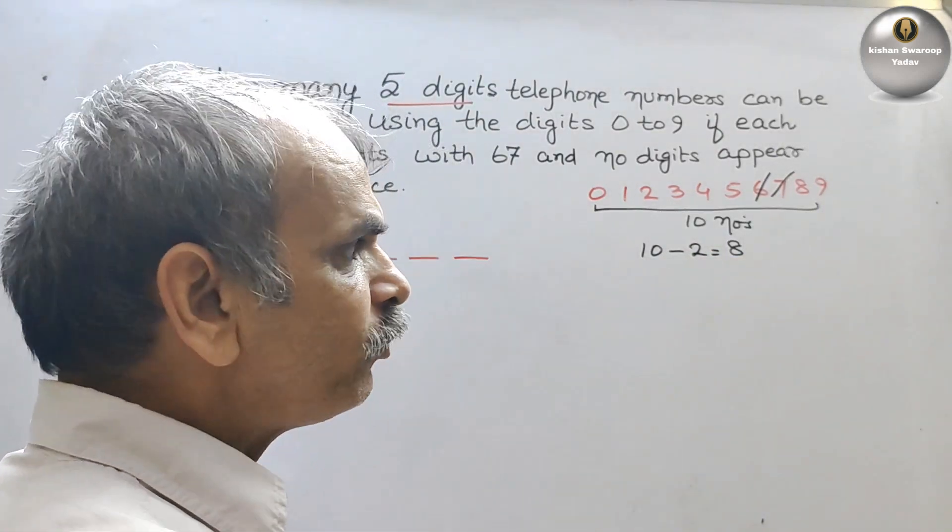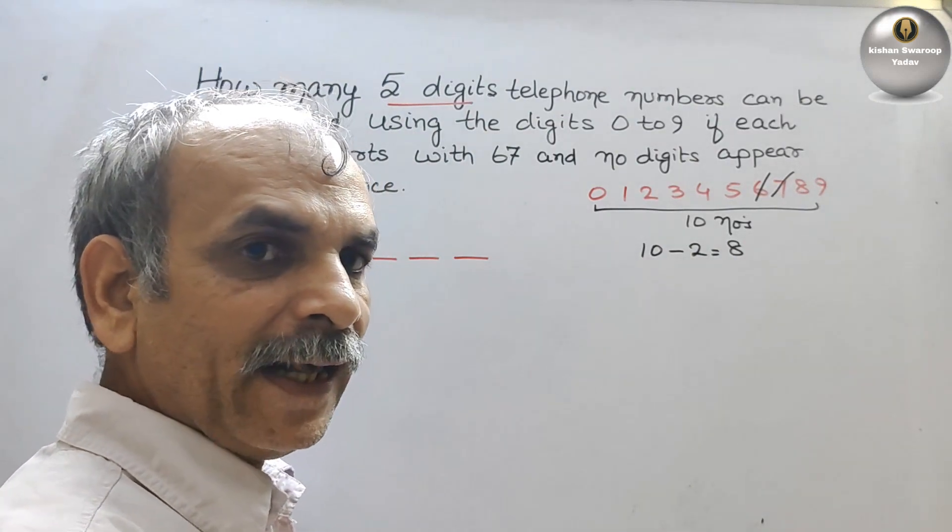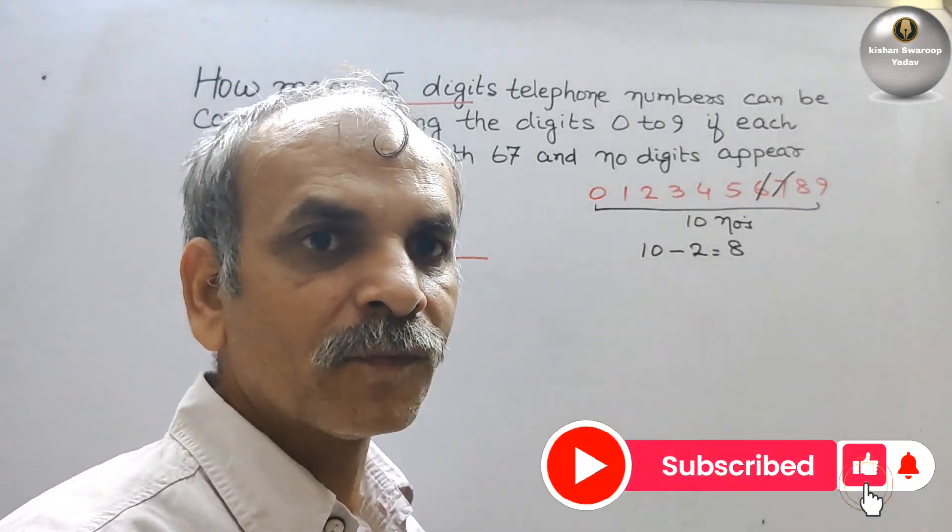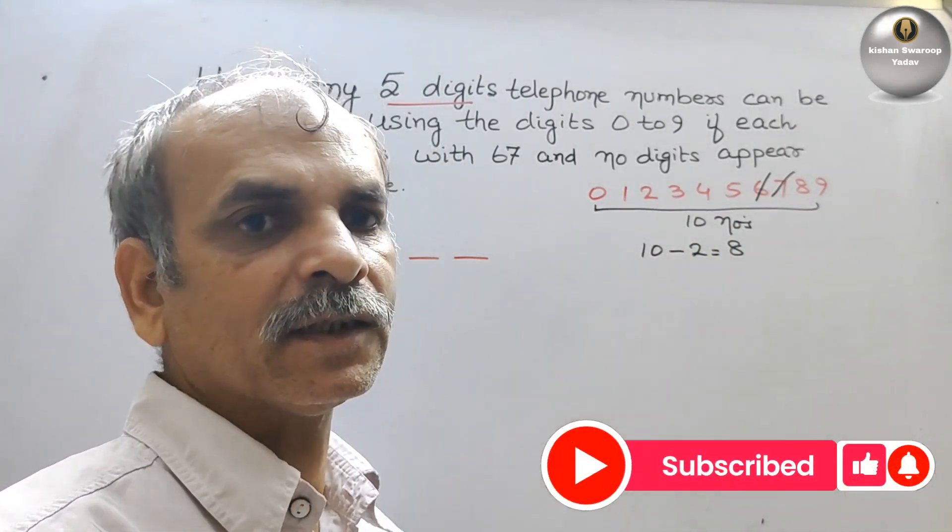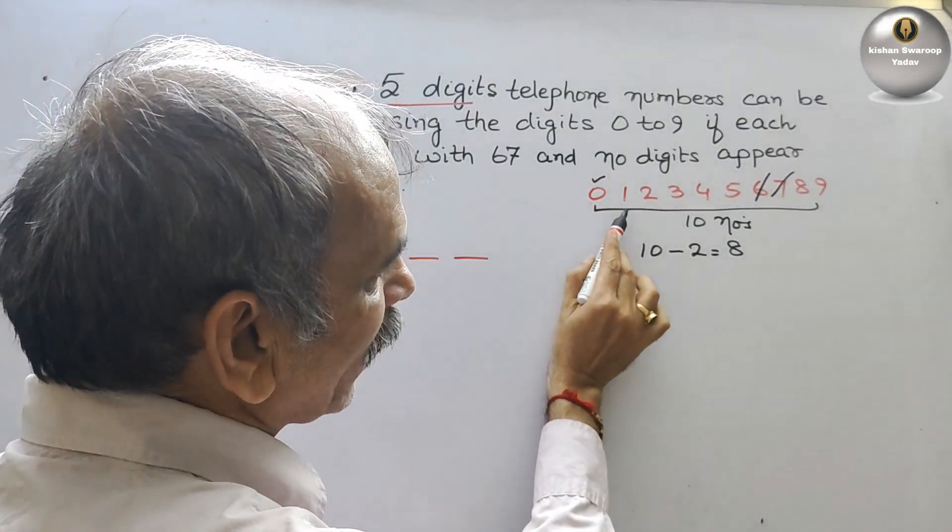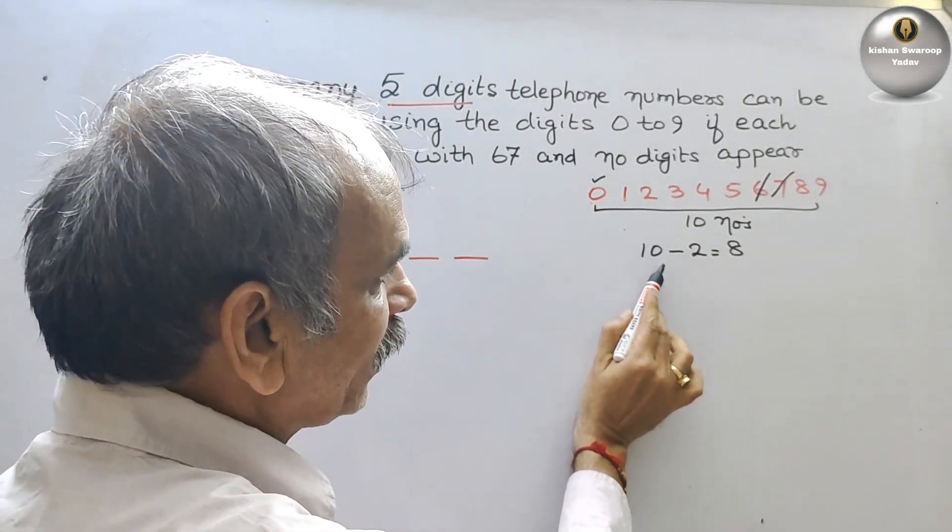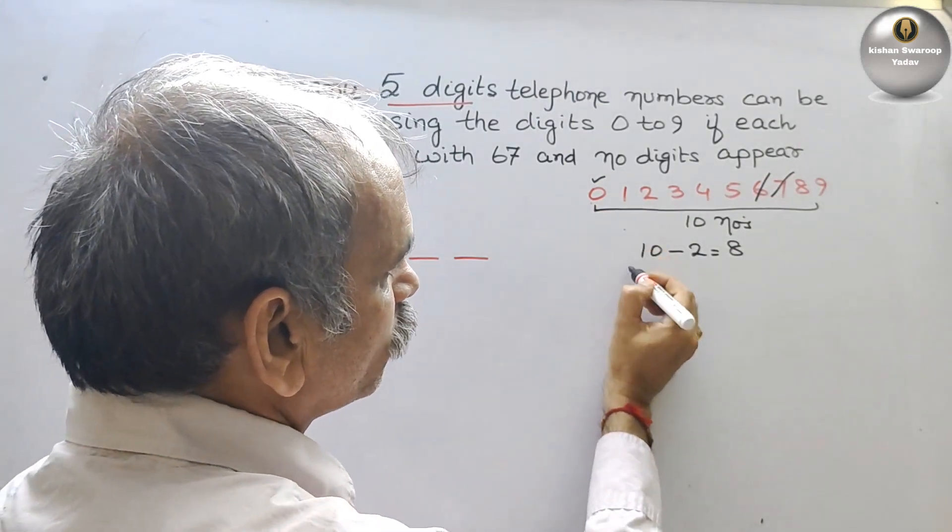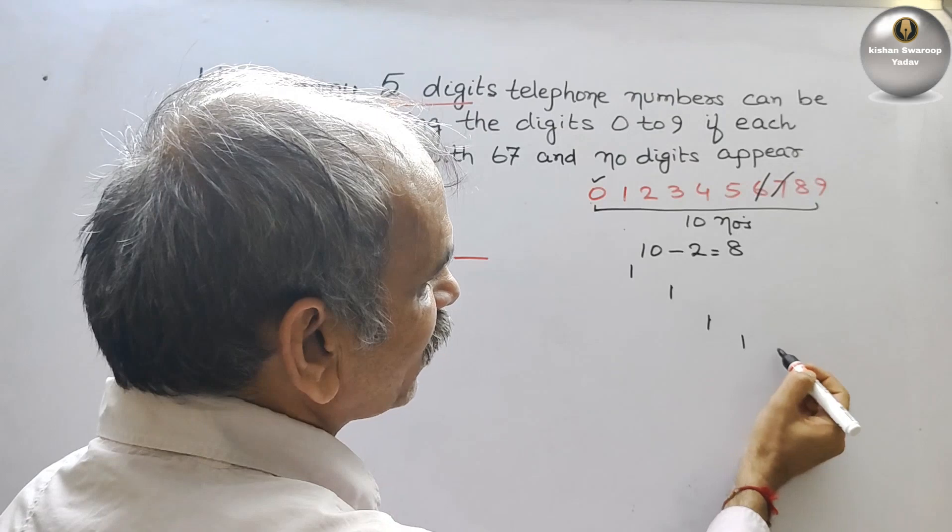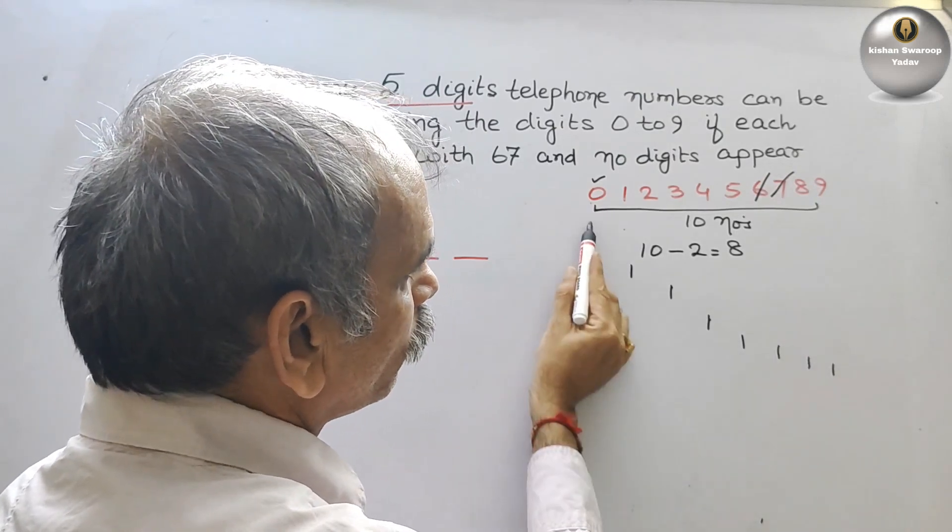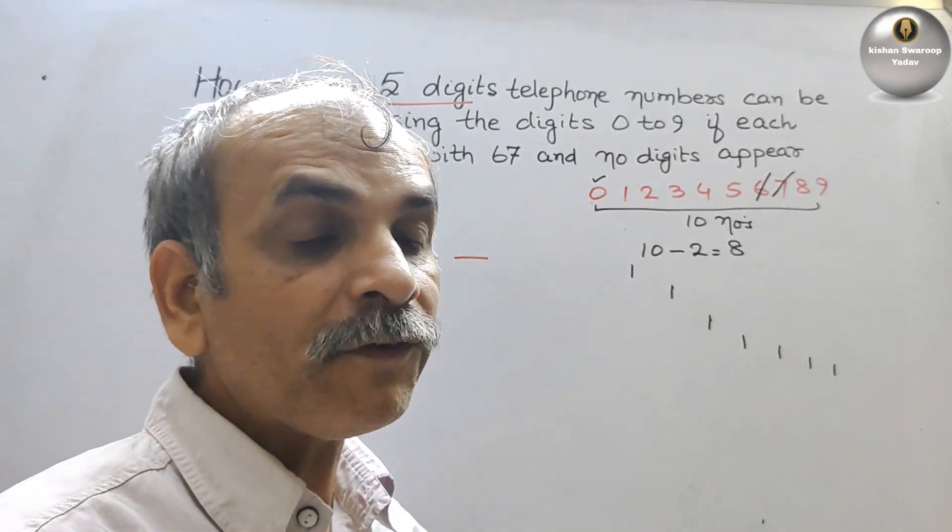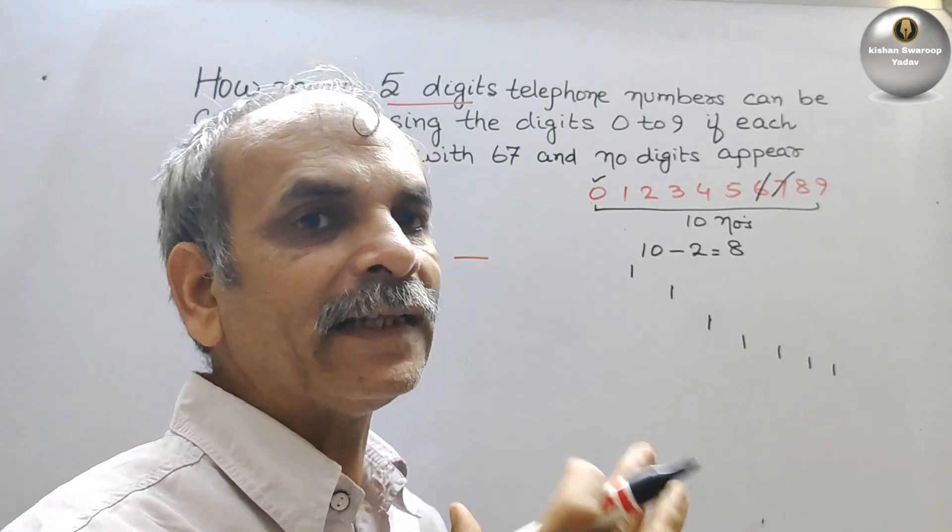So that means we can arrange these numbers in 8 ways. One number in 8 ways. Suppose we have taken this 0, so 0 can be written here also, can be written in this place also, can be written in this place. So you can see here or here or here or here. So likewise it will be gone: 1, 2, 3, 4, 5, 6, 7, 8. So 8 ways we can write or 8 places we can write that 0 number.